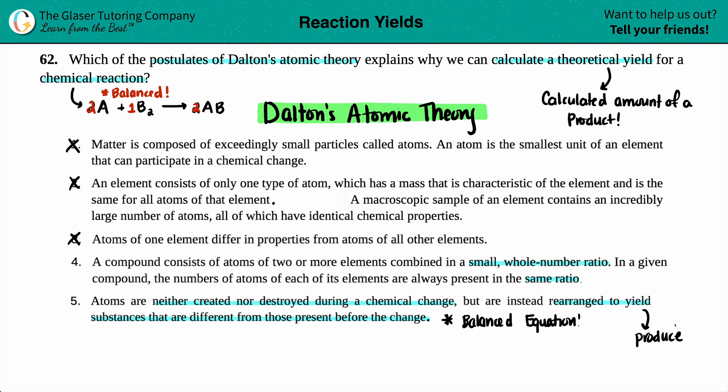If you're yielding substances, you're producing substances. A theoretical yield is a theoretical product. Product comes from produce. And those are different from those present before the change. So I think we got our answer.